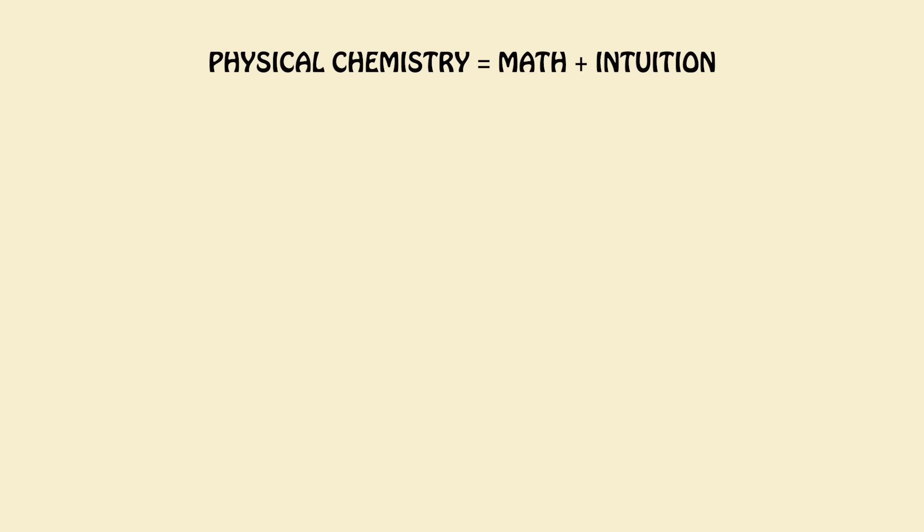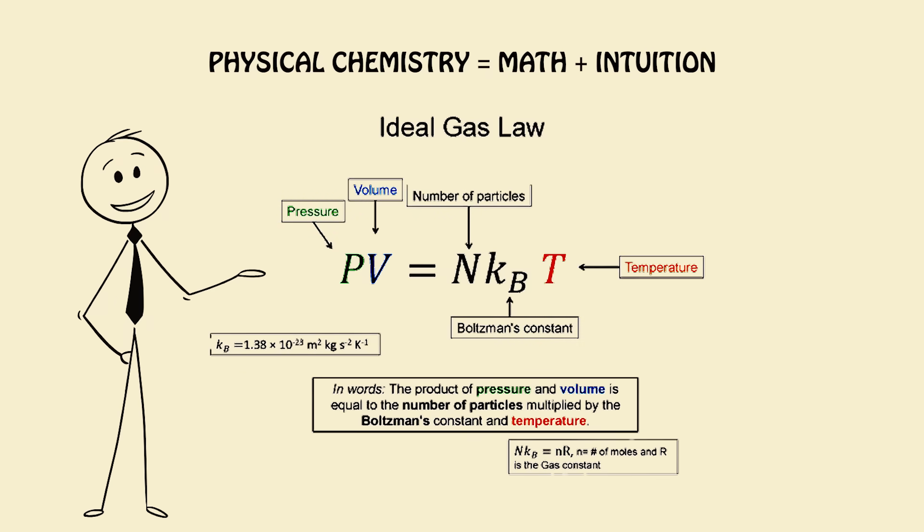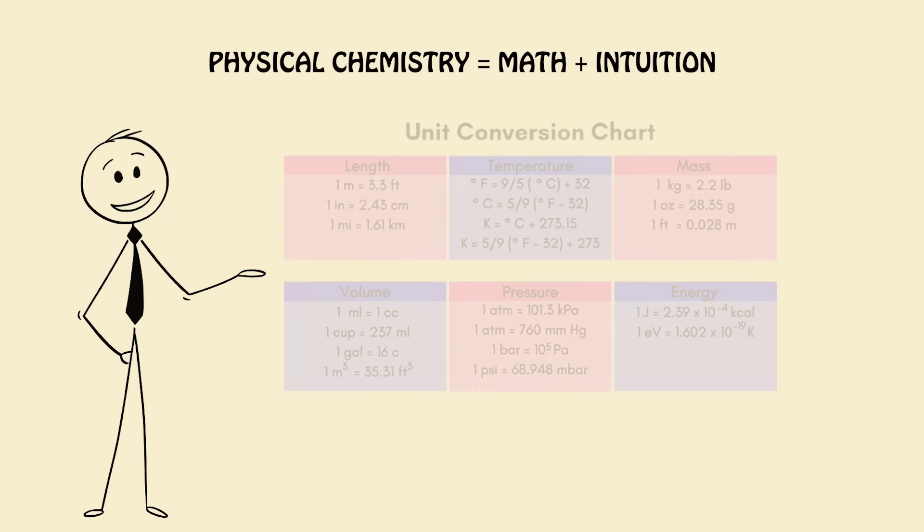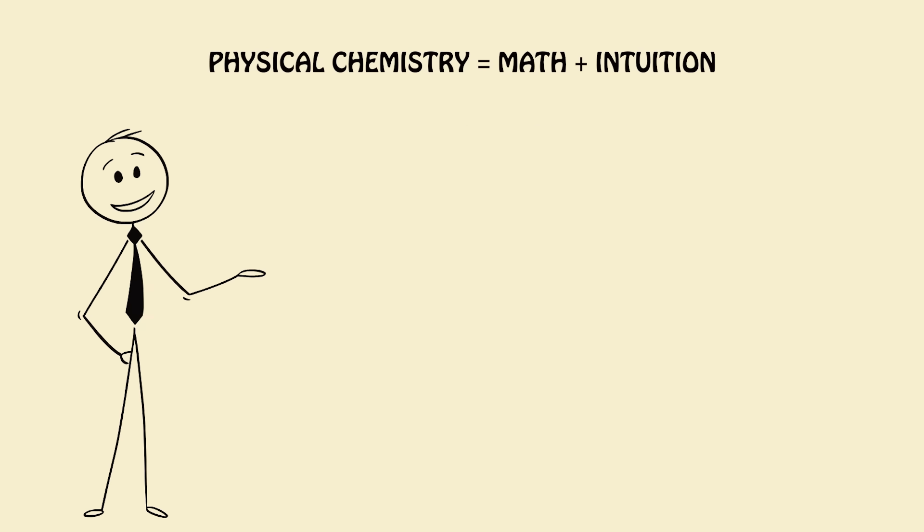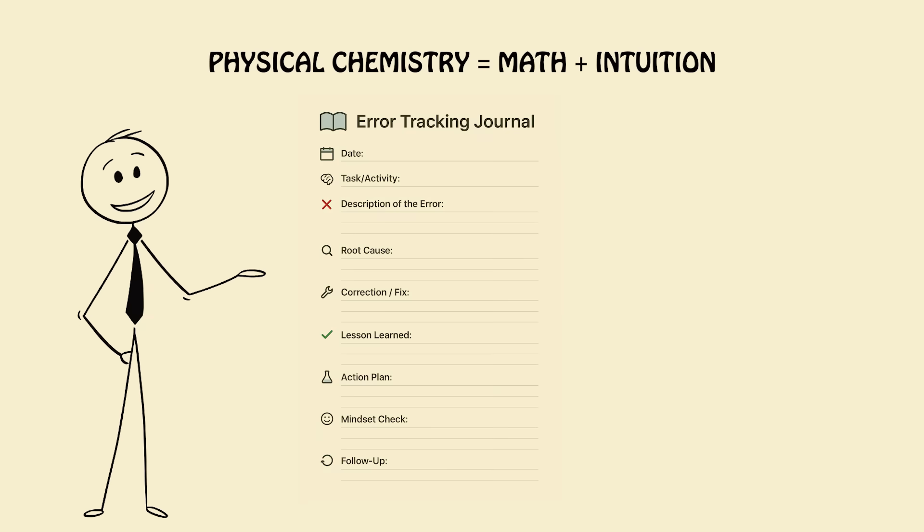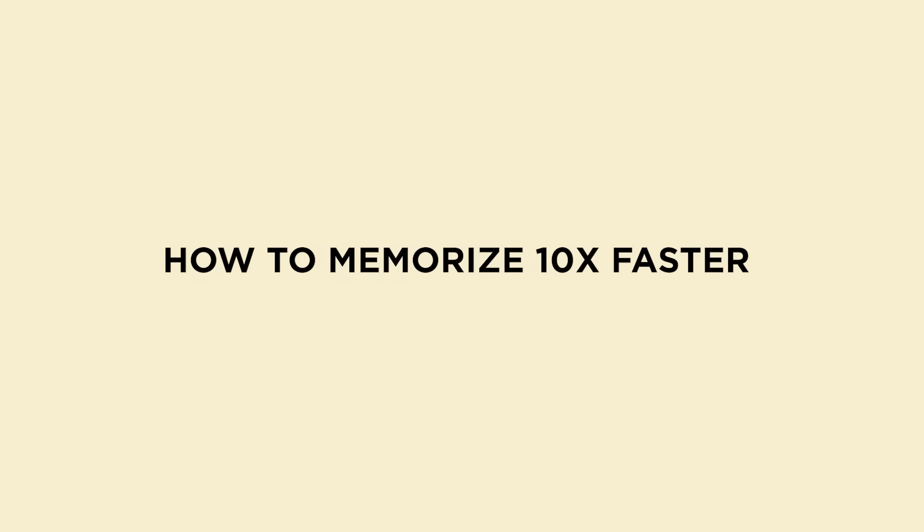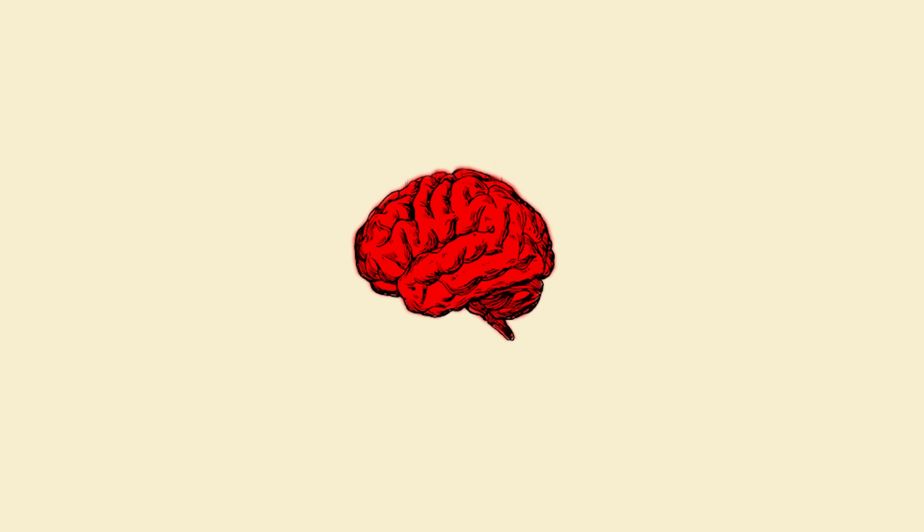Physical chemistry equals math plus intuition. Don't just memorize formulas, derive them once. This anchors them into your long-term memory. Practice unit conversions like a sport. Most silly mistakes are unit mistakes. Use error tracking journals. After every mock test, write what mistake you made, why you made it, and how to avoid it. No more forcing your brain to just remember.